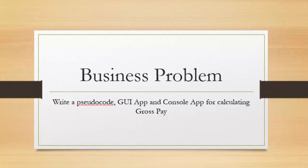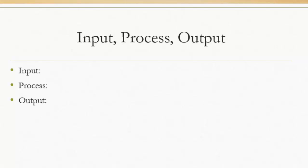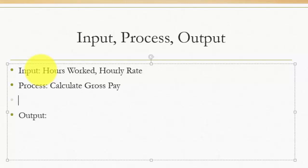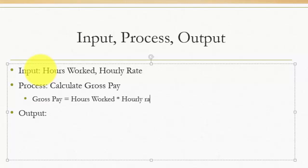We are now going to be looking at the input, process, and output for this code. In order to calculate the gross pay for somebody who is working hourly, we need to get some input from the user. The input that comes from the user is the number of hours worked and the hourly rate. On the processing side, we need to calculate gross pay, which is the formula: gross pay equals hours worked times hourly rate. We are not going to be considering any overtime in this particular example. The only output that is going to come out of this program is going to be the person's gross pay.